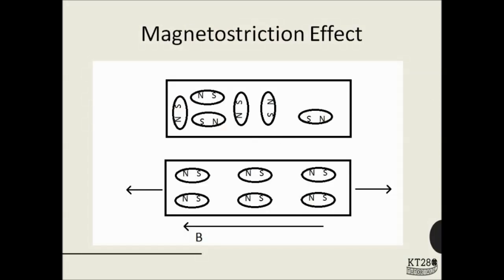Let's start with the magnetostriction oscillator. First we need to understand what the magnetostriction effect is. Here we have a ferromagnetic material. Each atom in a ferromagnetic material has its own dipole, but initially they are arranged in random order. When an external magnetic field is applied, they arrange themselves according to the applied magnetic field. As a result, they need a larger length to accommodate themselves, and this is known as the magnetostriction effect.